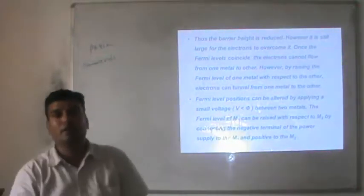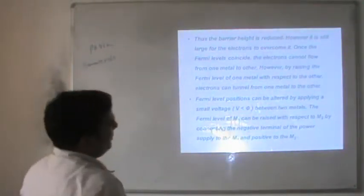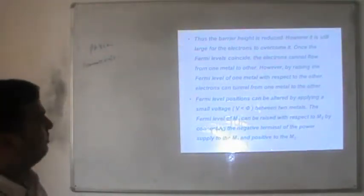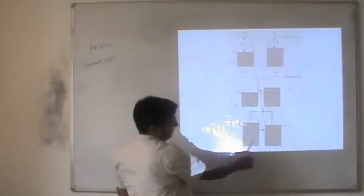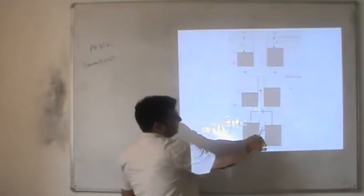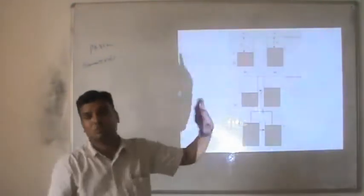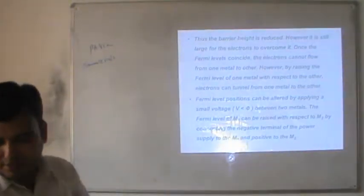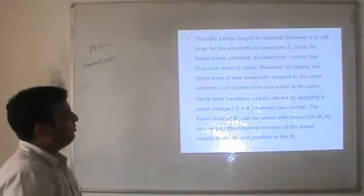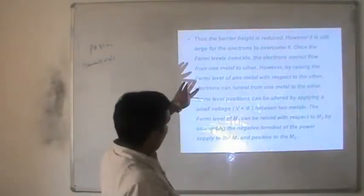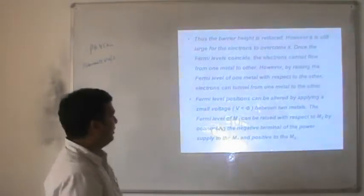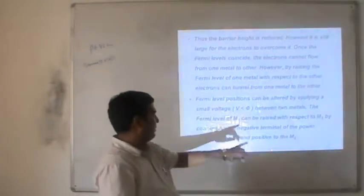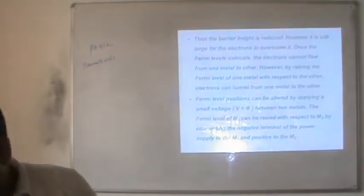When electrons tunnel from M1 to M2 or M2 to M1, the barrier height is reduced but still large. Once Fermi levels coincide, electrons cannot flow. However, by raising the Fermi level of one metal with respect to the other, electrons can tunnel from one metal to another. The Fermi level position can be adjusted by applying a small voltage. Between two metals, the Fermi level of M1 can be raised with respect to M2 by connecting the negative terminal of the power supply to M1 and positive to M2.